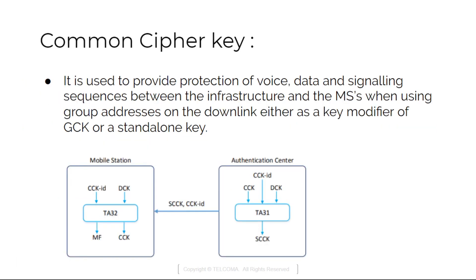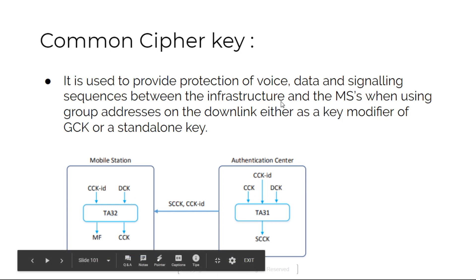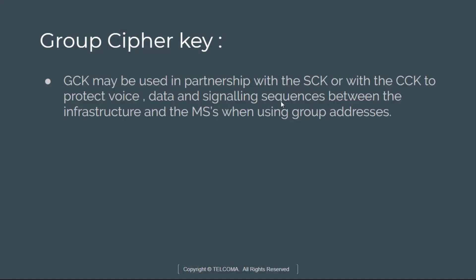DCK is the Derived Cipher Key. CCK is the Common Cipher Key — it is used to provide protection of voice, data, and signaling between the infrastructure and a mobile station when using group addresses on the downlink. We can see in the diagram: this is the mobile station, this is the authentication center, and these are the CCK keys.